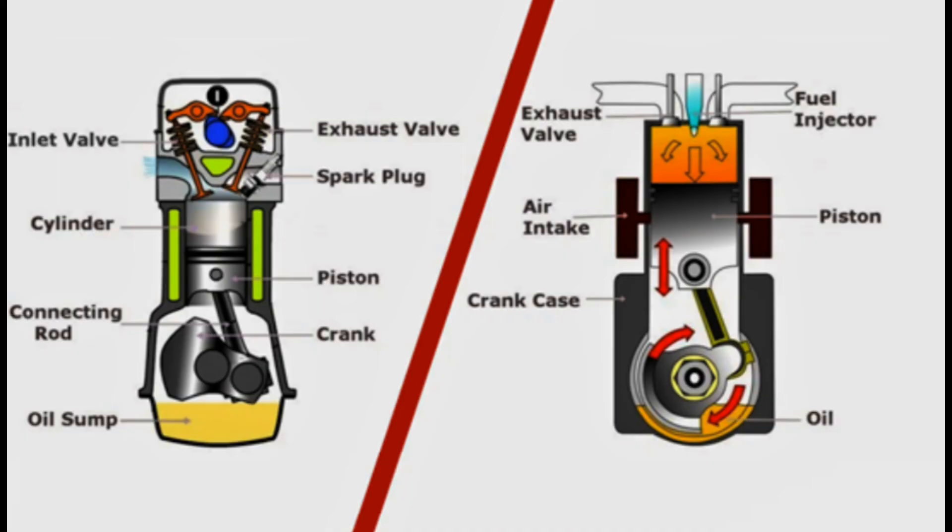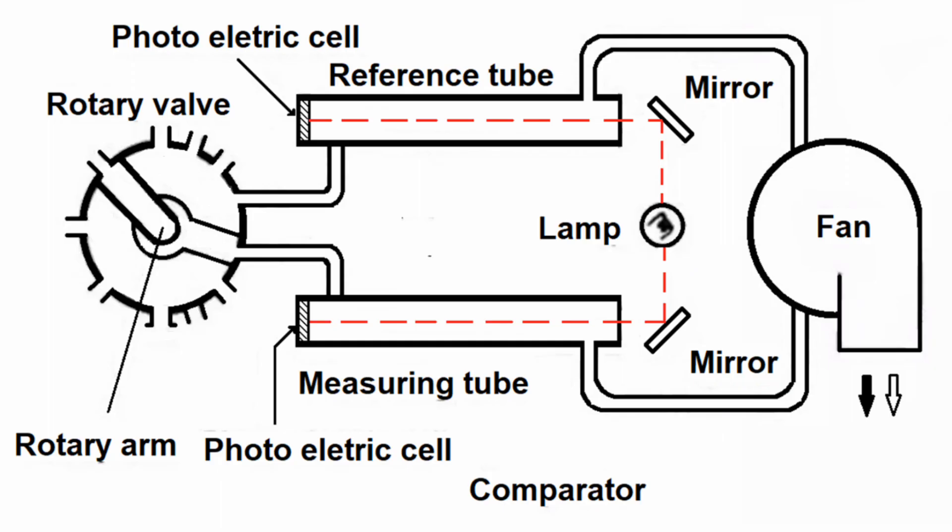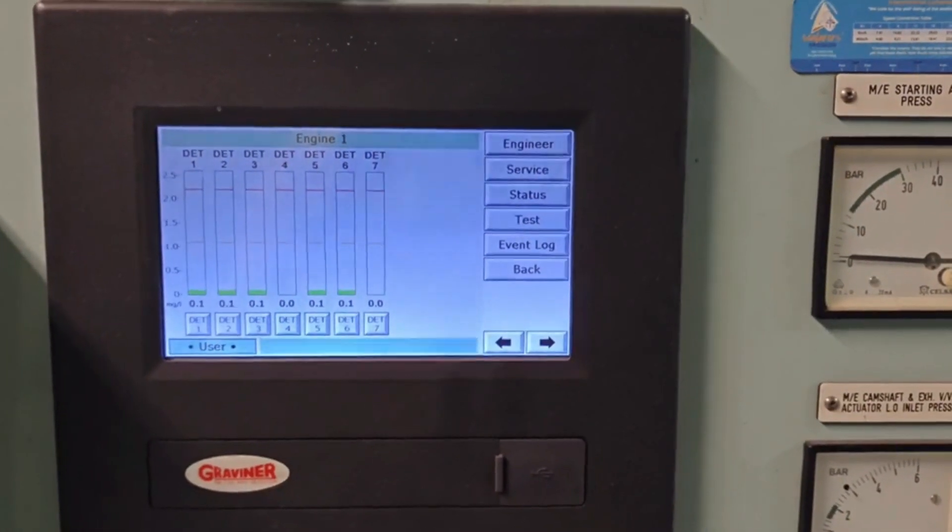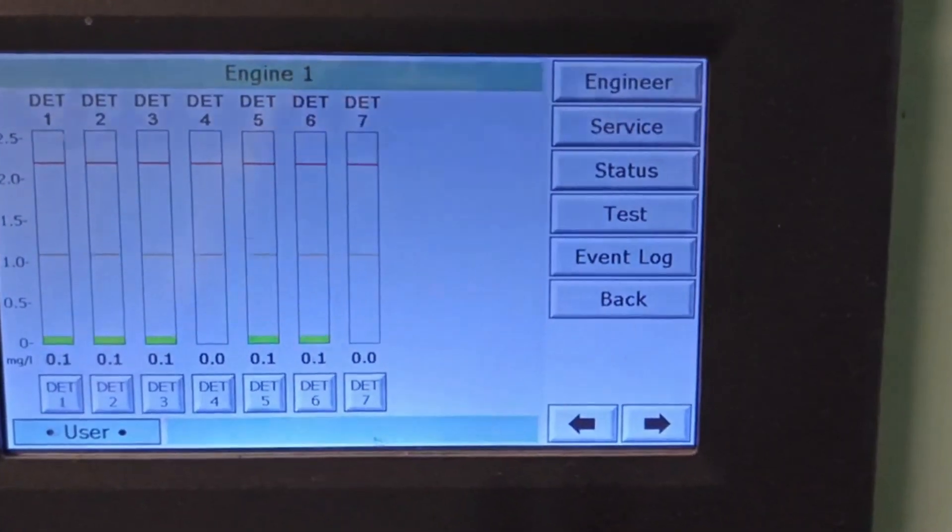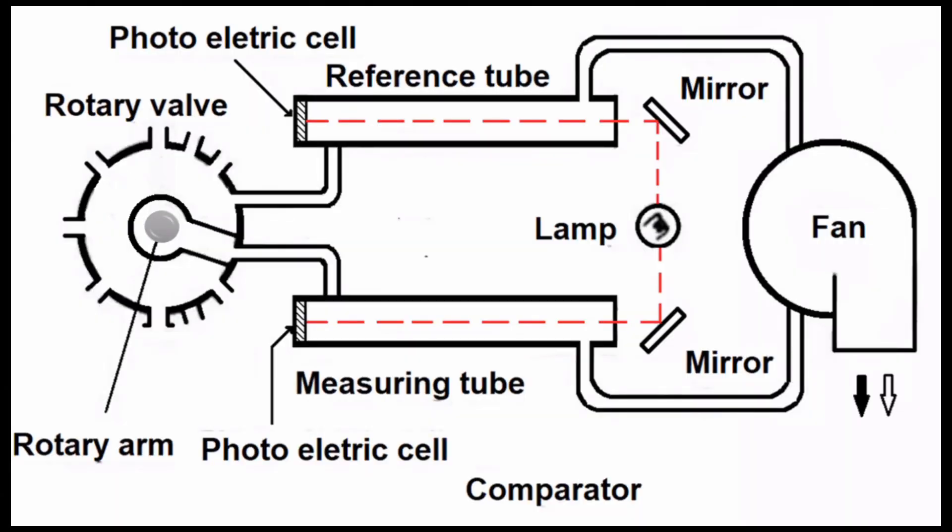It is important that this concentration of oil mist should be detected, thereby avoiding explosion and damage to the engine. This role is done by an oil mist detector that is OMD. It will detect the oil mist from individual units and raise the alarm. Crankcase of each cylinder is connected to the OMD which continuously checks the air sample from each cylinder.